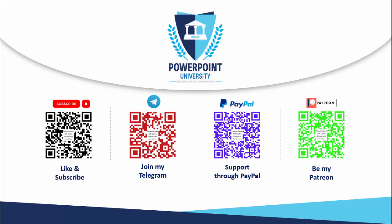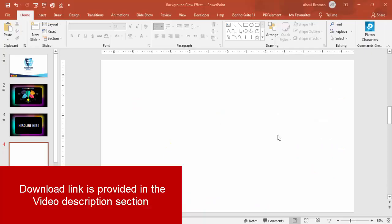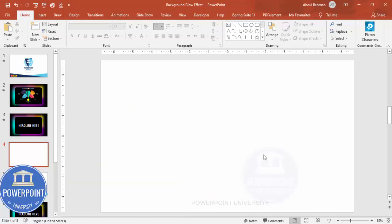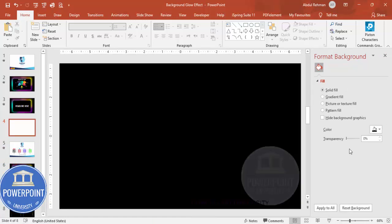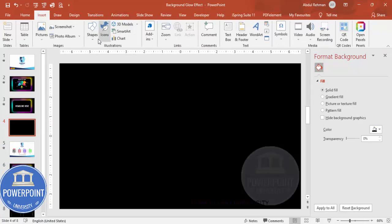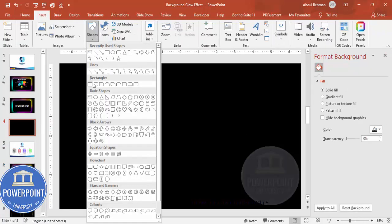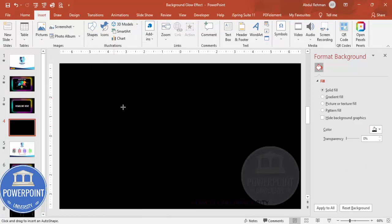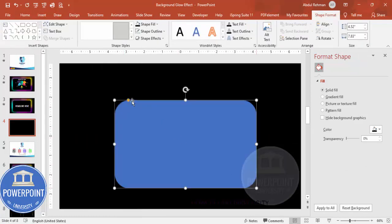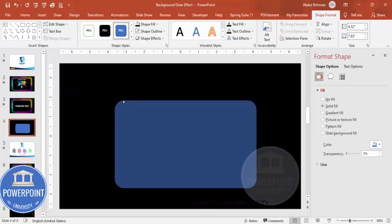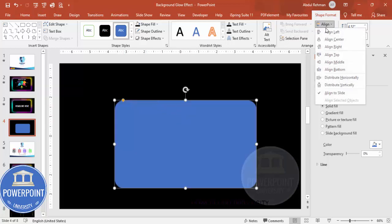Let's start the tutorial. Add a new slide and change the background to black — right-click, go to Format Background, and choose black. Then go to Insert Shape, select the rounded corner rectangle, draw it, and make the corners a little bit curved.